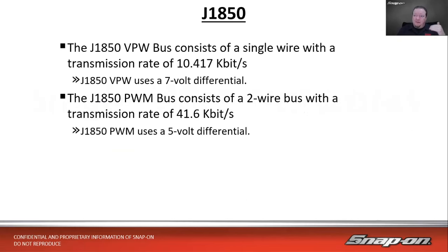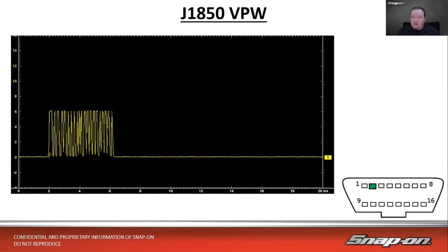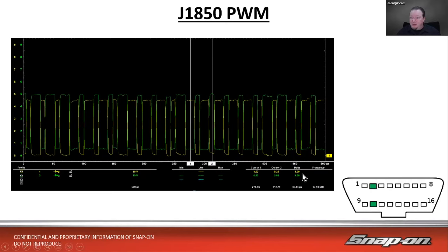The J1850 variable pulse width bus is a single wire with a transmission rate of about 10 kilobits per second and uses a 7-volt differential. The J1850 pulse width modulated bus is a two-wire bus with 41 kilobits per second and a 5-volt differential. On the scope you can see VPW goes up to about 7 volts; PWM shows about 4.3–4.5 volts, with one channel going high while the other goes low — that's your ones and zeros.